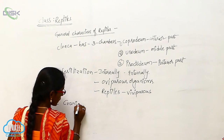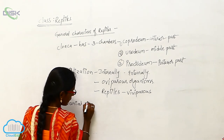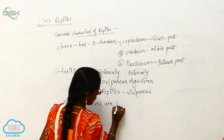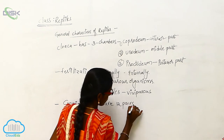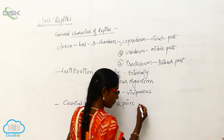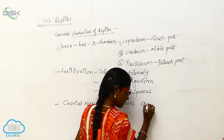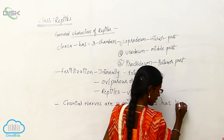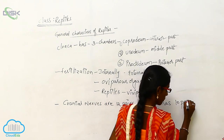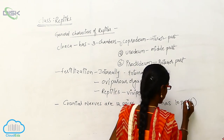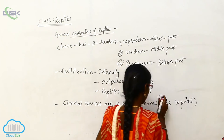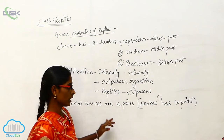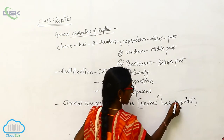Mostly cranial nerves are 12 pairs, but snakes have 10 pairs.